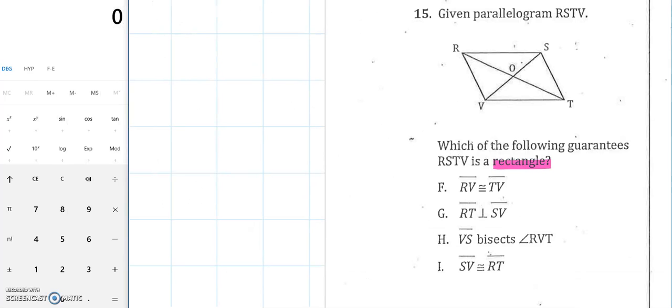The first one says RV is congruent to TV. The fact that these two adjacent sides are congruent, that's not going to prove that this is a rectangle. That's going to prove that this is a rhombus. So that's not what we want. So it's not going to be choice F.